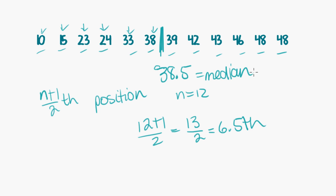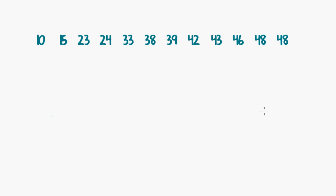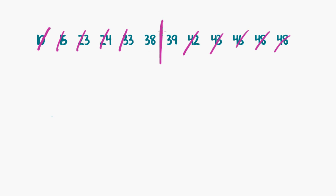Now let's try it using the crossing-off method. I'm going to count some from the bottom, some from the top and find my way into the middle. After crossing off balanced numbers from both ends, I'm left with two data points. Halfway between 38 and 39 is 38.5.